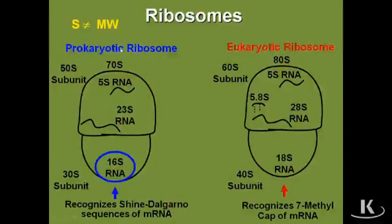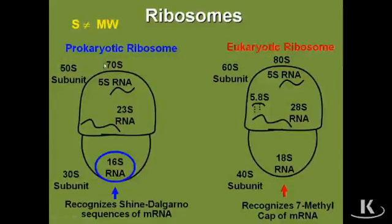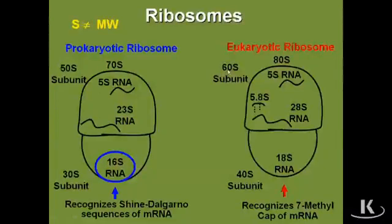In the eukaryotic ribosome, there's a 60S and 40S ribosomal subunit that come together to make an 80S ribosomal subunit — once again, not additive. Here's a good way to remember: prokaryotic ribosomal subunits all start with an odd number — bacteria are odd, weird little creatures. So the 70S complete ribosome is subdivided into a 50S and a 30S. Eukaryotes start with an even number: the complete ribosome is 80S, subdivided into a 60S and 40S.